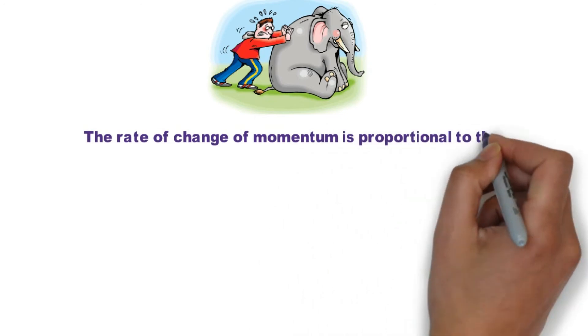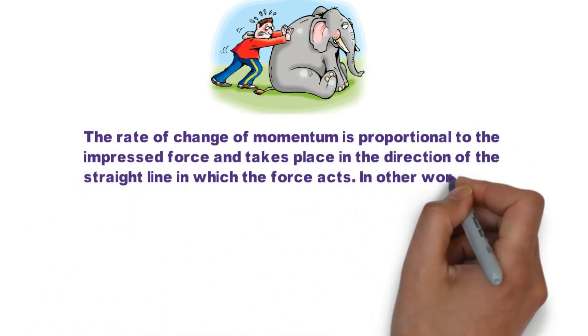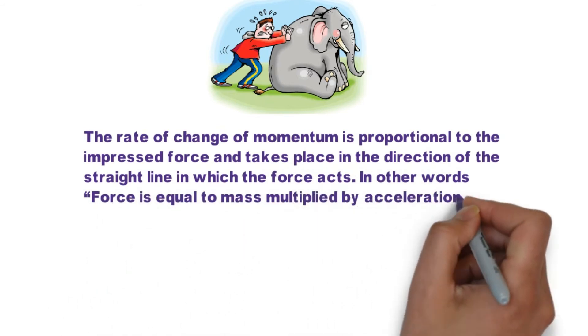5. Newton's Second Law of Motion. The rate of change of momentum is proportional to the impressed force and takes place in the direction of the straight line in which the force acts. In other words, force is equal to mass multiplied by acceleration.